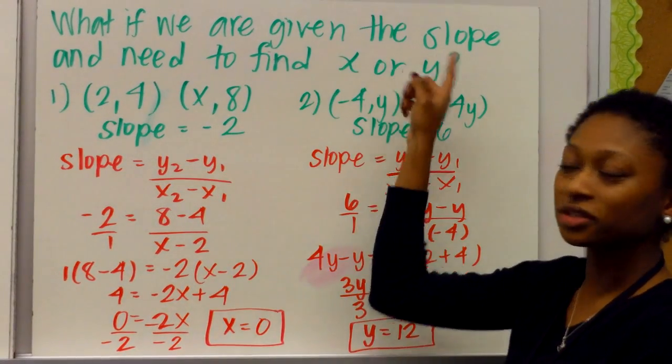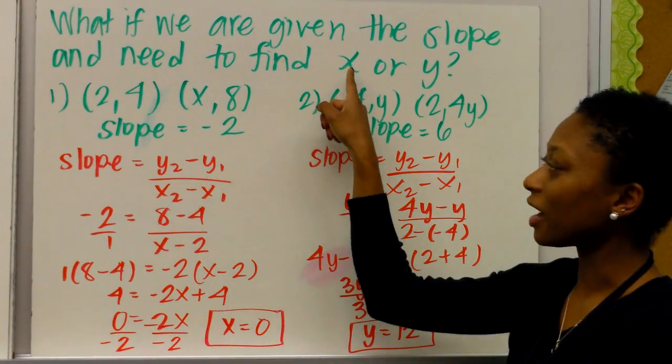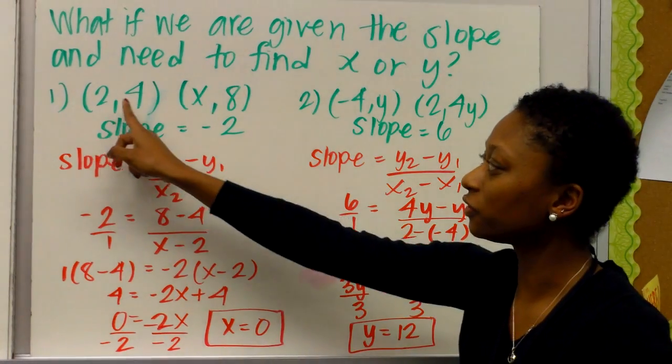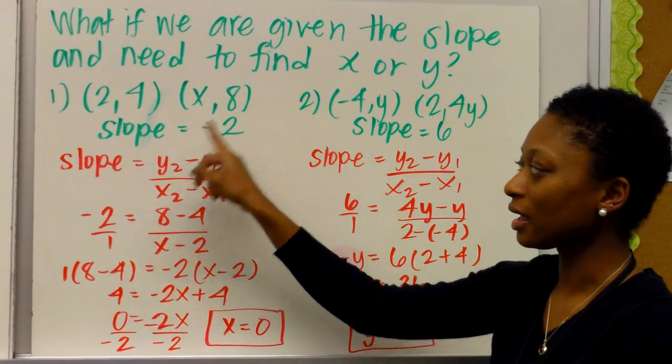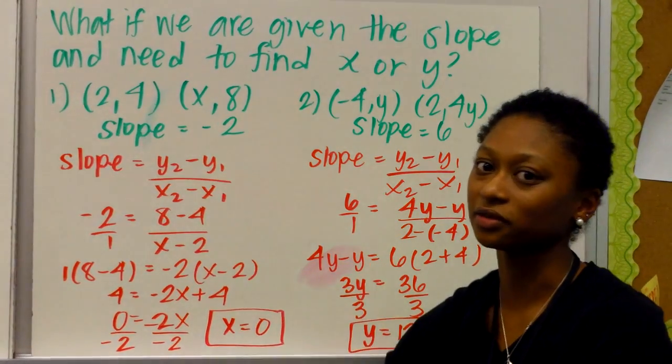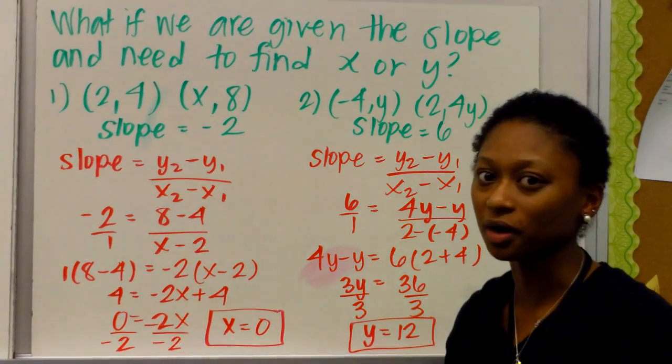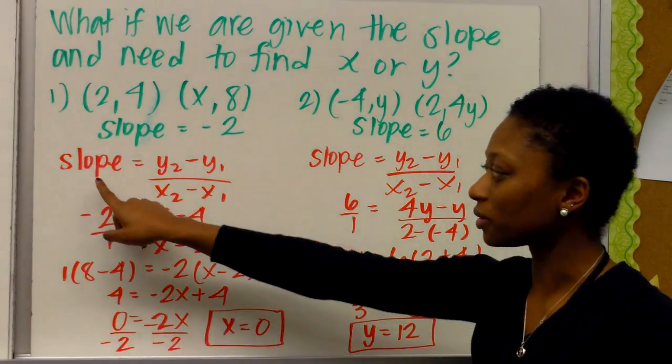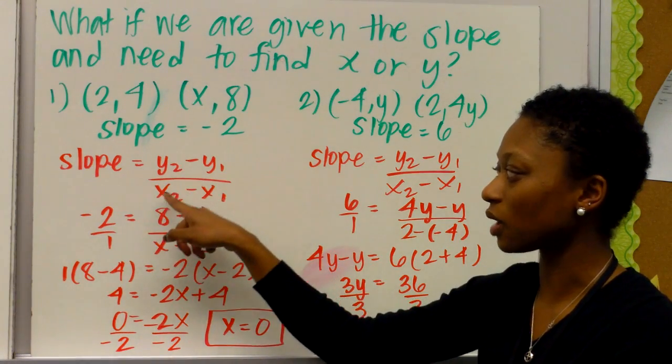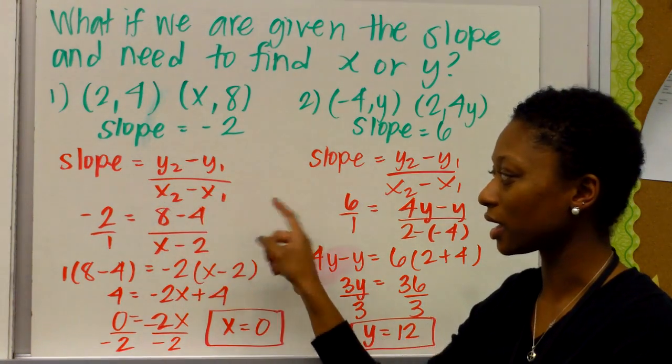What if we're given the slope and actually need to find x or y? So say I have the point 2, 4, and x, 8, and they tell me that the slope is negative 2. In a sense, we're kind of working backwards because we're given the slope already. We're simply going to use the formula slope equals